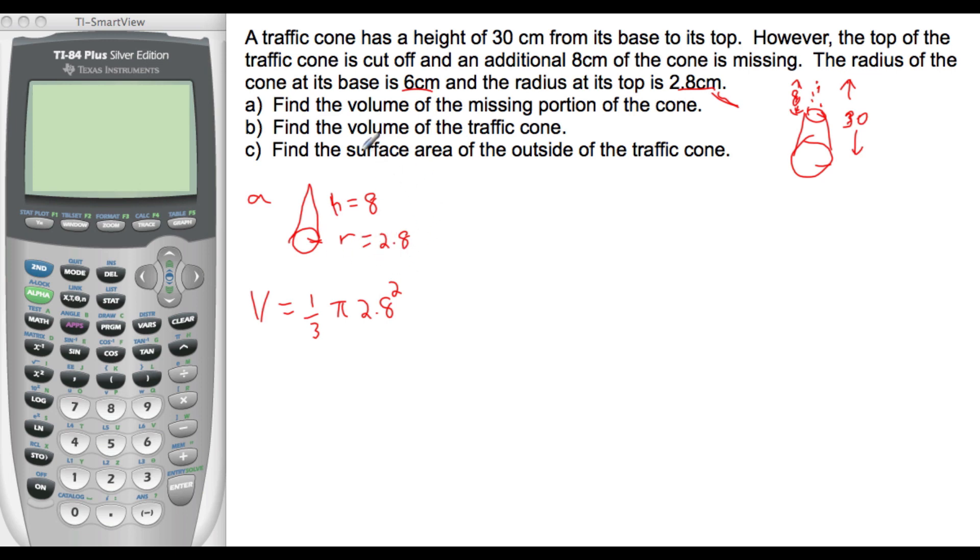And if you aren't sure what the volume of the cone is, you can always look it up on the formula booklet. So 1 third pi r squared, the area of the base, times the height of 8. So 1 third pi times 2.8 squared times 8. Three significant figures, 65.7 centimeters cubed is the volume of the missing portion.